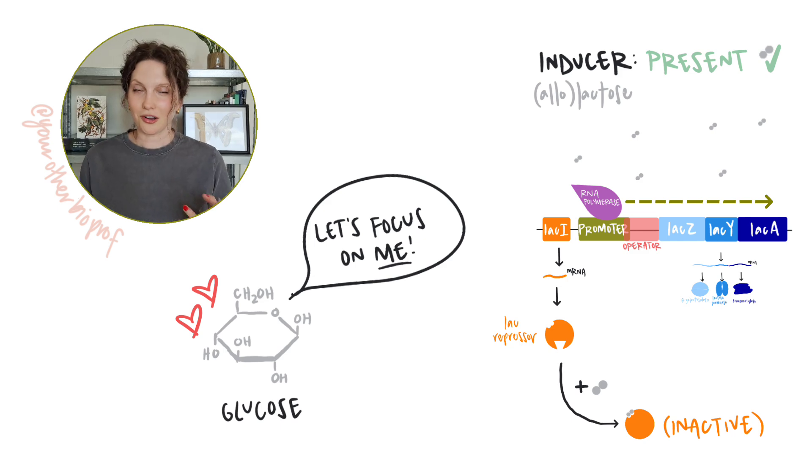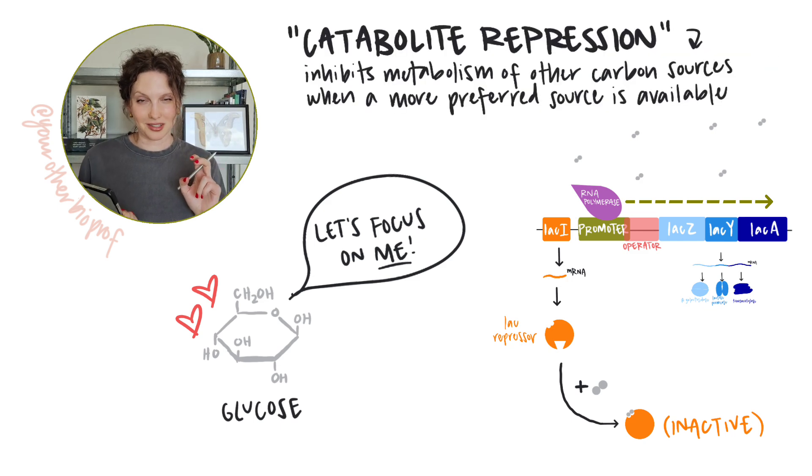This is often called catabolite repression because it looks like the availability of a preferred sugar, here that's glucose, is repressing metabolism of other sugars, other carbon sources. But don't let the name fool you. We've got another inducible system here.